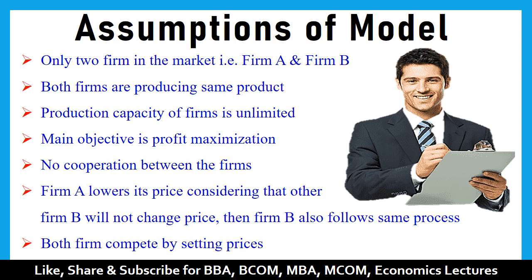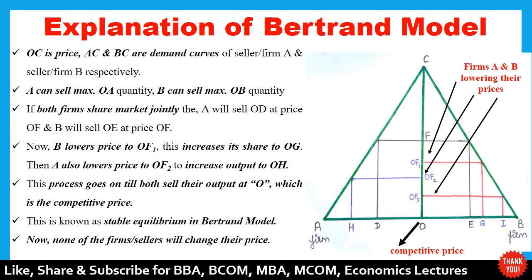In this case, the firms A and B compete by setting prices. We will discuss this model with the following diagram. Here OC is the price. AC is the demand curve of seller A or firm A, and BC is the demand curve of seller B or firm B.